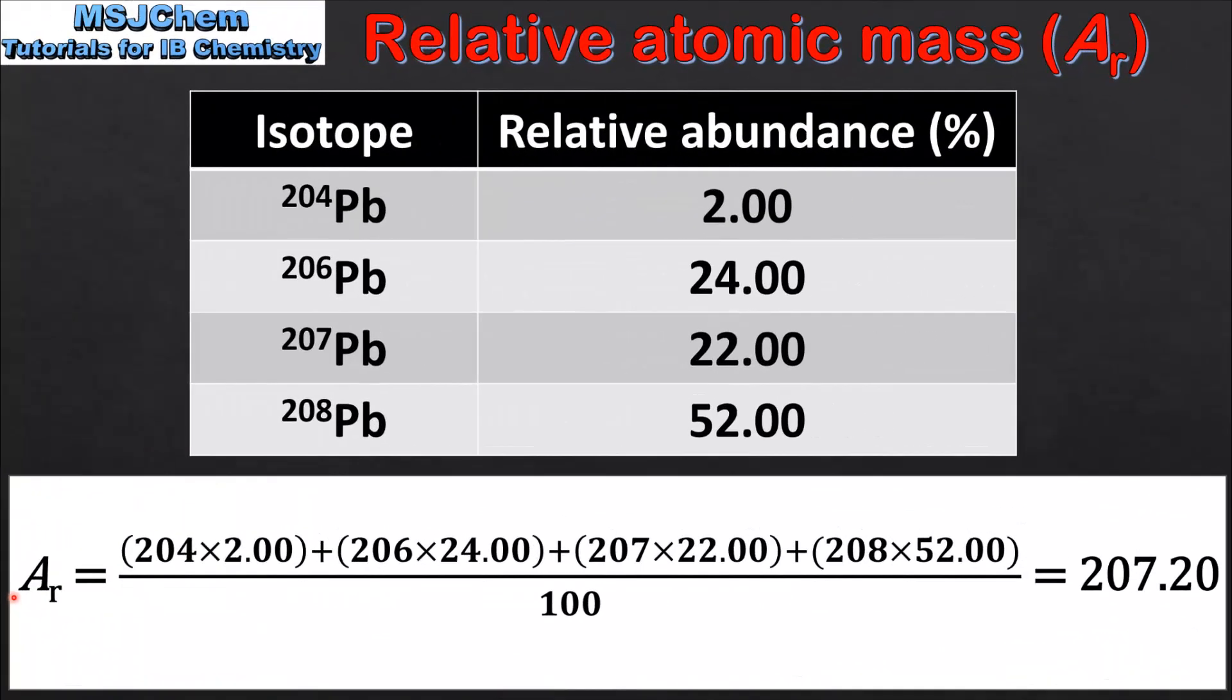So to calculate the relative atomic mass we multiply the mass number of each isotope by its relative abundance. We then add each of these together and divide by 100. So for lead that's 204 times 2 plus 206 times 24 plus 207 times 22 plus 208 times 52 which we then divide by 100 and this gives us a relative atomic mass of lead of 207.20.